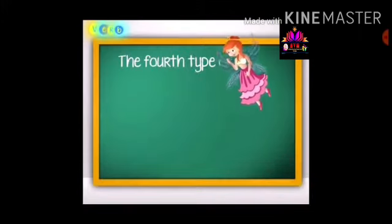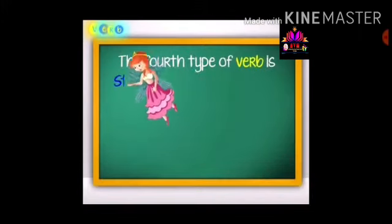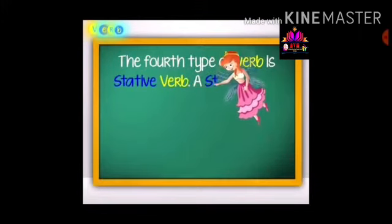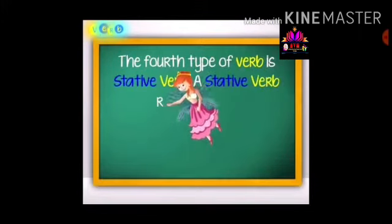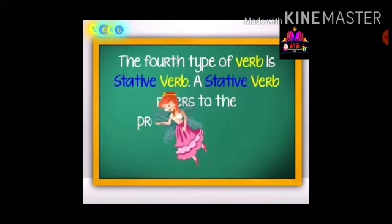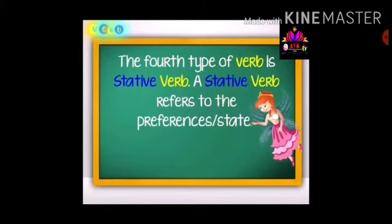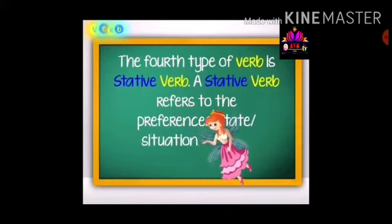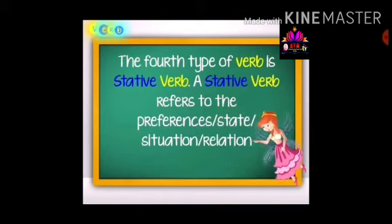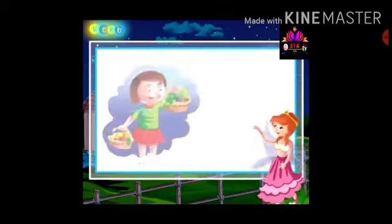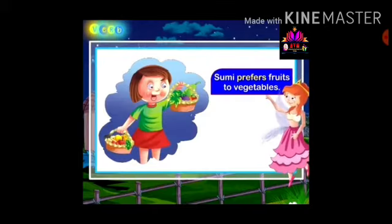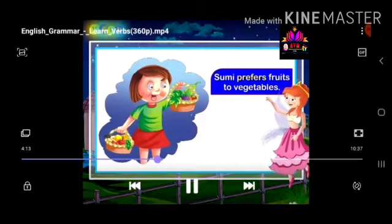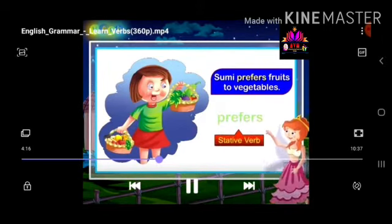The four types of verbs includes the stative verb. A stative verb refers to the preferences or state or situation or relations of the subject. Sumi prefers fruits to vegetables. Prefers is a stative verb.